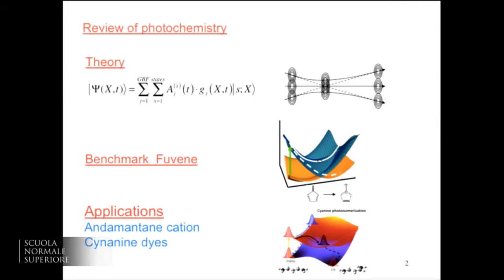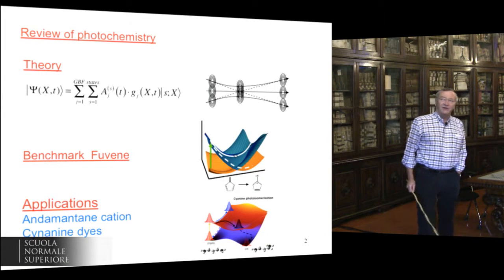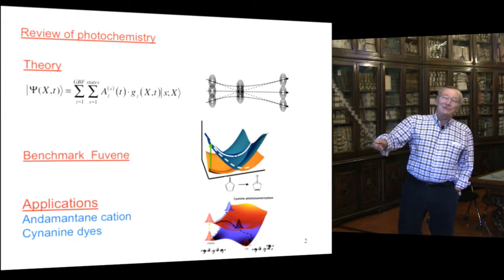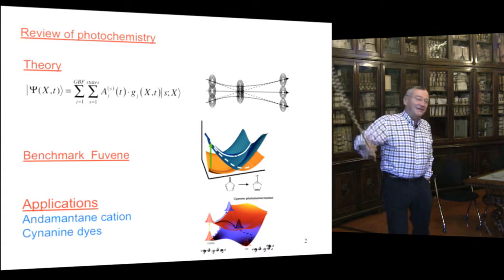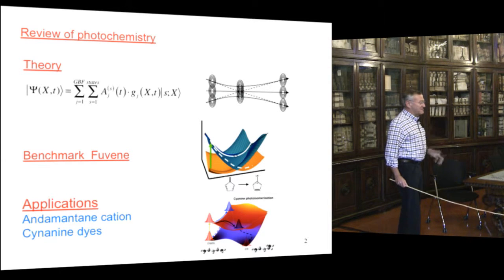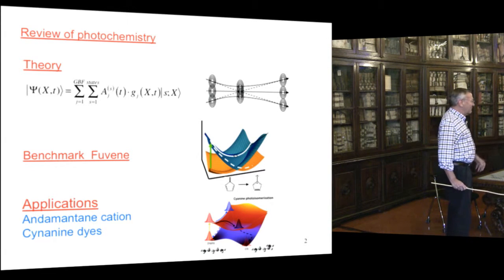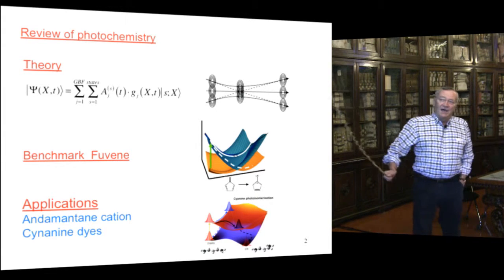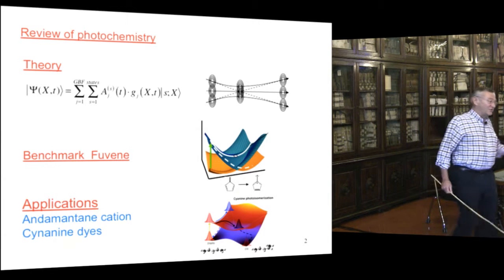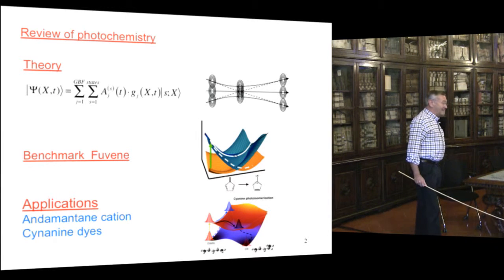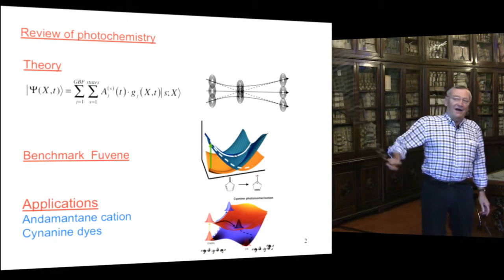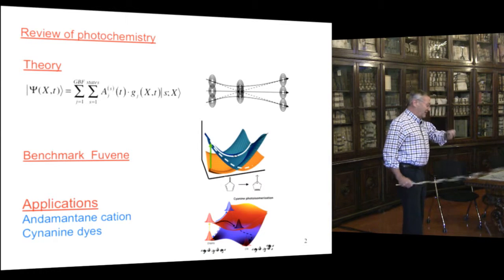I want to talk about the theory of the type of wave functions that we're going to use to describe nuclear motion. This equation fits almost anywhere in theoretical chemistry — it's a linear combination of something. In this case I'm going to talk about linear combinations of Gaussians, and these Gaussians are going to be centered on trajectories — like classical dynamics, but driven by the time-dependent Schrödinger equation rather than the Newtonian equations of motion. Then I want to give a benchmark example and some applications, which I'll talk about fairly superficially.